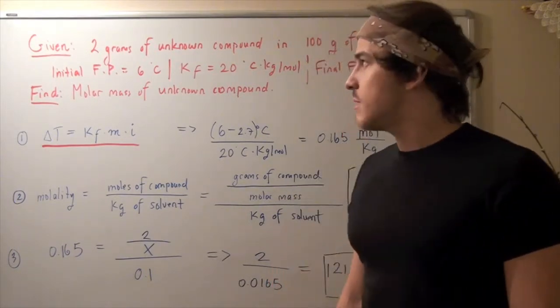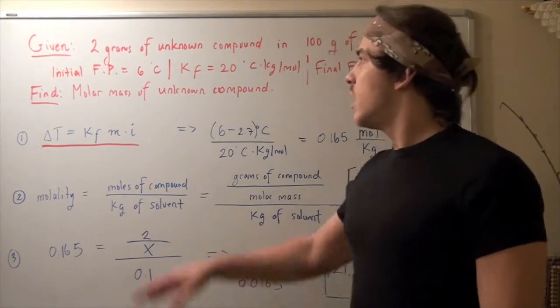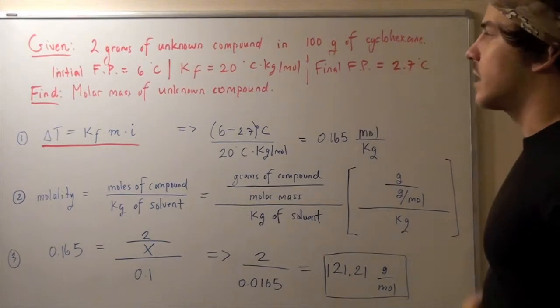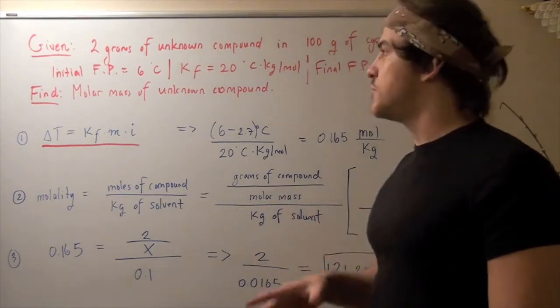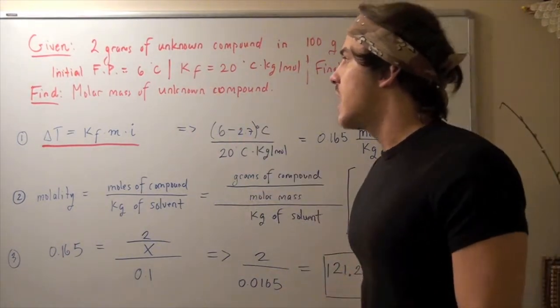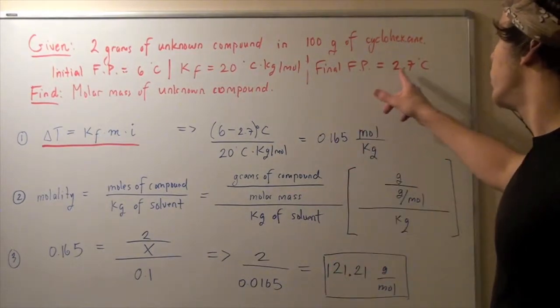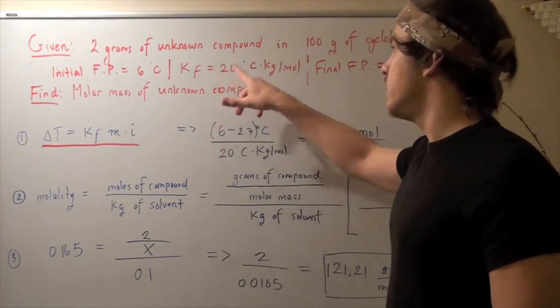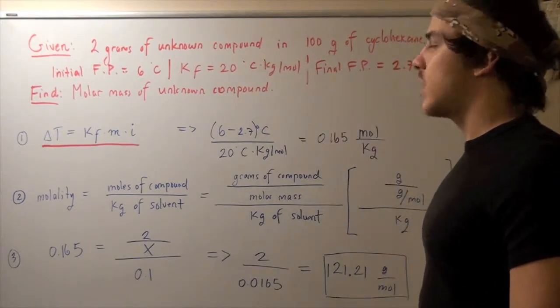So in this example, we're given 2 grams of an unknown compound and we're given 100 grams of some solvent, cyclohexane. Now our initial freezing point is 6 degrees Celsius. Our final freezing point is 2.7 degrees Celsius. Our constant for freezing is 20 Celsius times kilograms per mole.